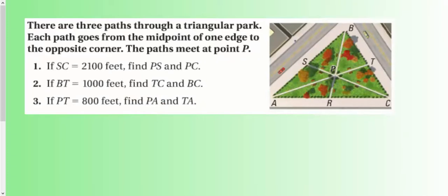There are three paths through a triangular park. Each path goes through the midpoint of one edge to the opposite corner. The three paths meet at point P. So since they're meeting from the vertex to the midpoint, this P is going to be the centroid.